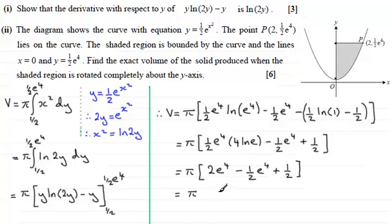And 2 e to the 4 minus a half e to the 4 is going to be 1 and a half e to the 4. Or we could write it as 3 over 2 e to the 4. And then we've got the plus a half.